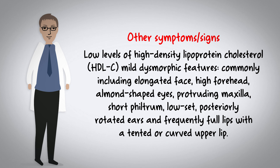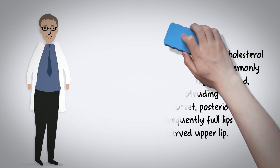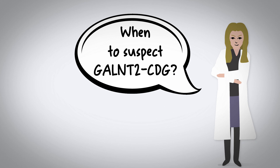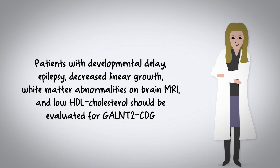Dysmorphic features commonly include an elongated face, high forehead, almond-shaped eyes, protruding maxilla, short philtrum, low-set posteriorly rotated ears, and frequently full lips with a tented or curved upper lip. When to suspect GALNT2-CDG: patients with developmental delay, epilepsy, decreased linear growth, white matter abnormalities on brain MRI, and low HDL cholesterol should be evaluated for GALNT2-CDG.